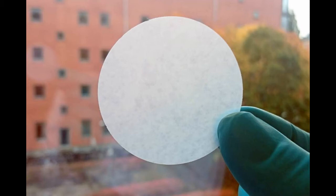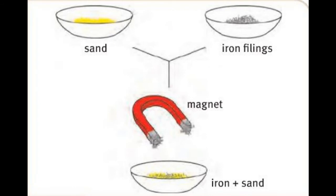The next method that we are going to look at is using a magnet. When I have a mixture of sand and iron filings, I can use a magnet to separate the sand from the iron filings, because the iron filings will be drawn to the magnet and the sand will then remain in a different bucket.